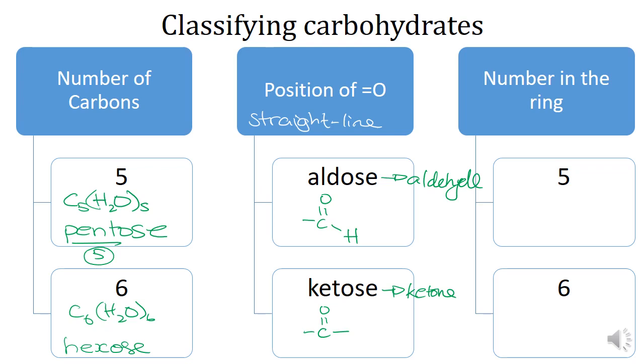We then have when these convert from the straight line to the ring form, whether there are five carbons in the ring or six carbons in the ring. If they're five, they're furanoses, and if they're six, they are pyranoses.